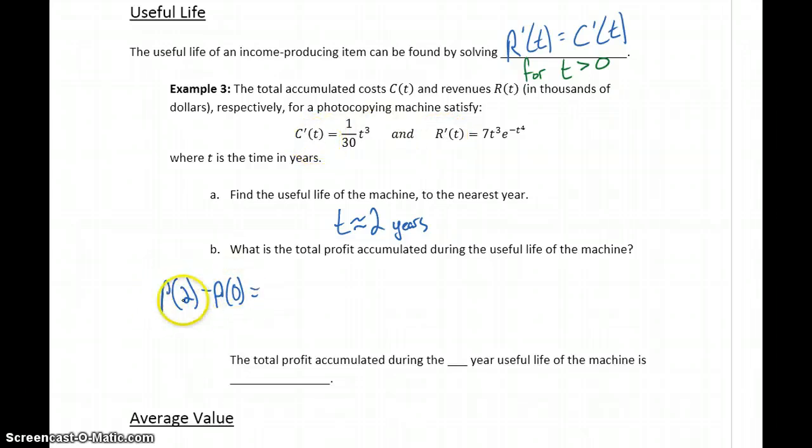To find this change or increase in our profit, we can integrate from zero to two our marginal revenue, r prime of t, minus our marginal cost, c prime of t, to generate that result.